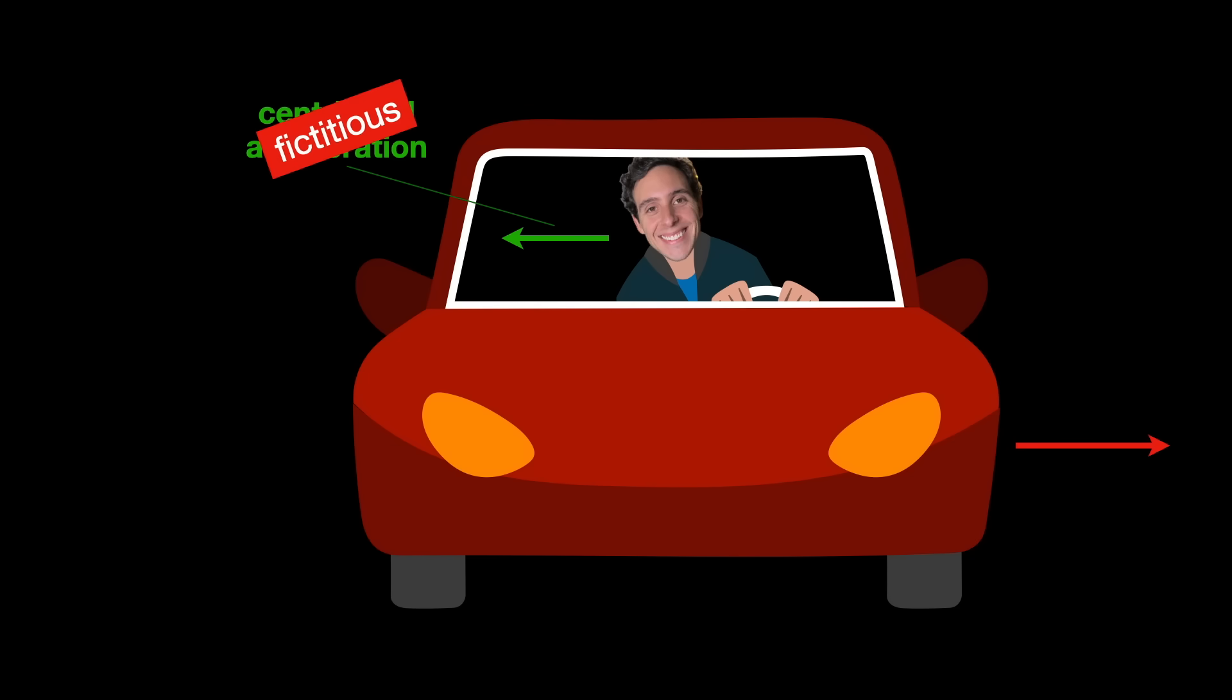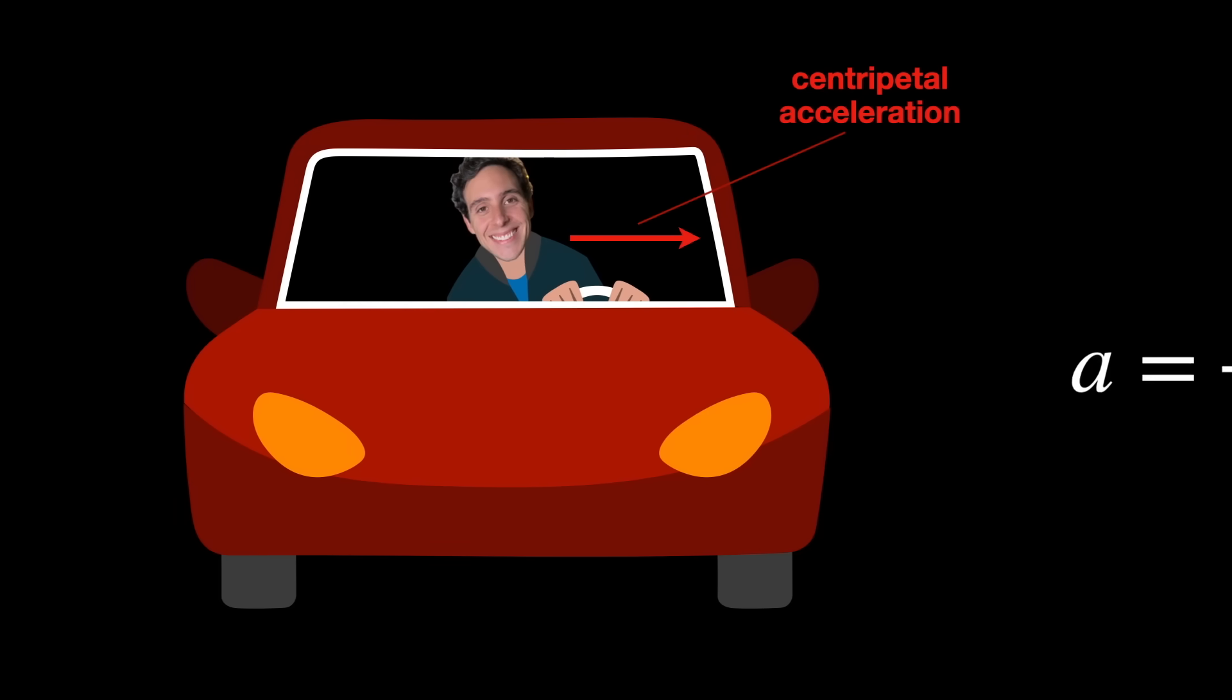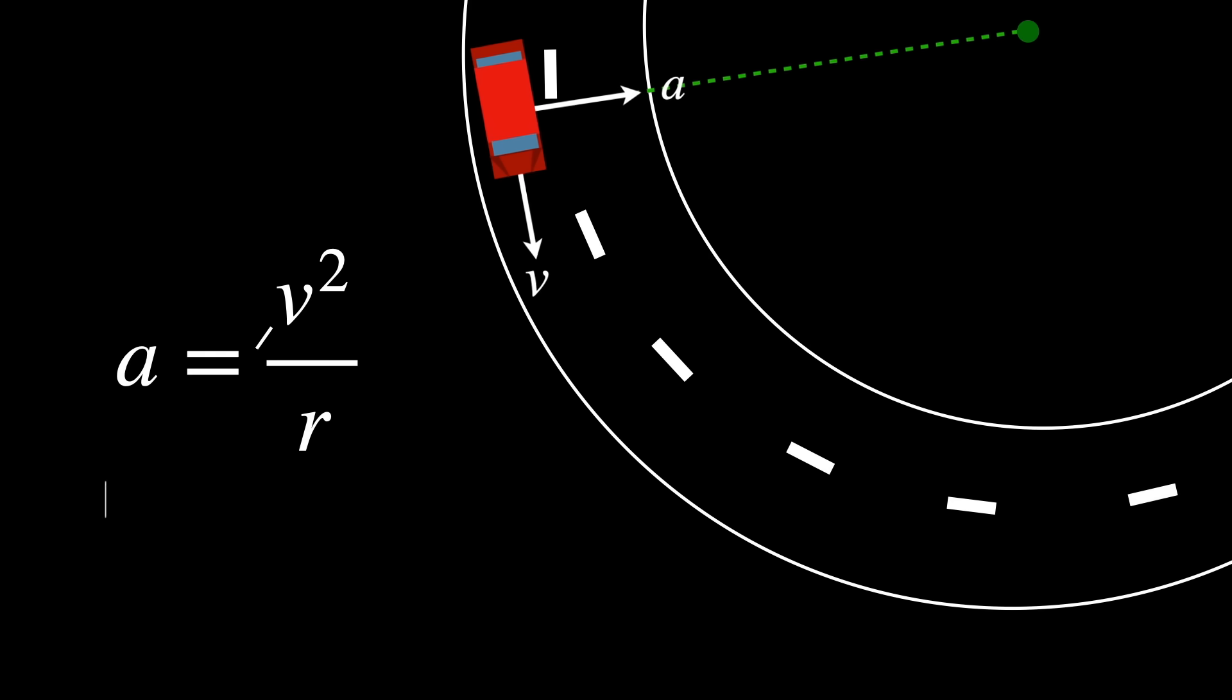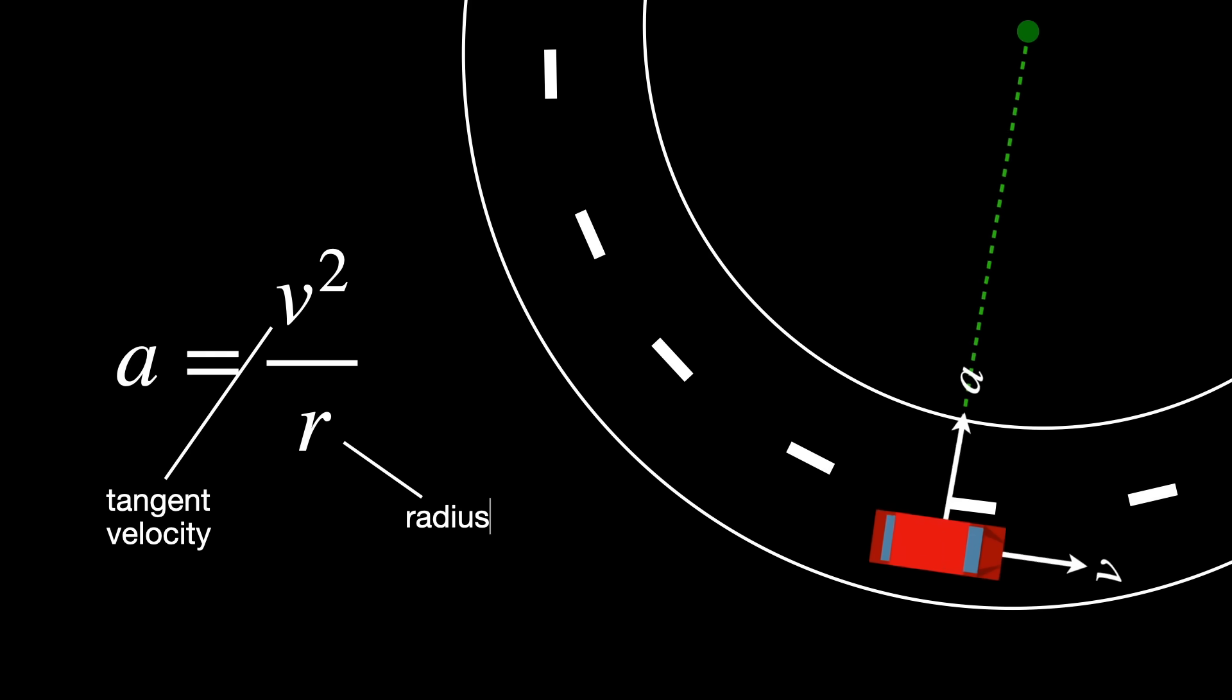This is actually a fictitious acceleration. The real acceleration here is the one inwards, the one that keeps the car, Luca, and everything inside of it moving along the curved path. This is called centripetal acceleration, and is calculated this way. Where v here stands for tangent velocity and r for the radius. But that's the point here. The radius of what?